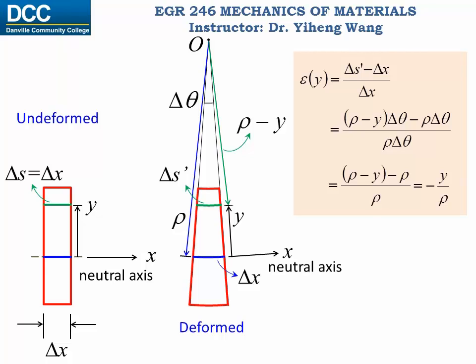And the maximum normal strain happens at one of the edges which is further away from the neutral axis with a distance of c. And the absolute value of the maximum normal strain at this cross section equals to c over rho. And for a given loading situation and for a given cross section, this absolute maximum normal strain is a constant.